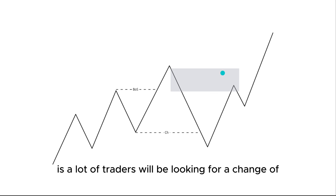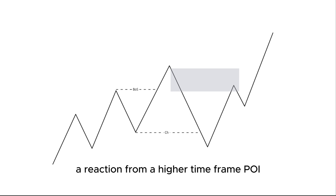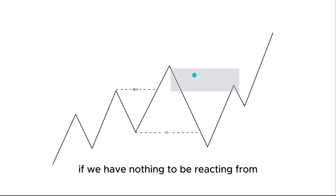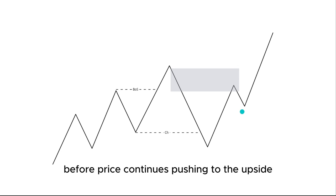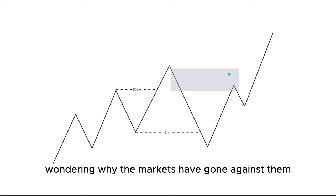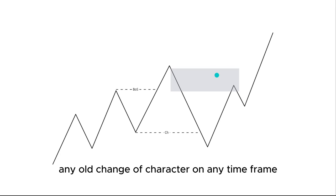The anticipation from smart money concept traders is to trade the reaction of an order block that caused this change of character. The common problem is that a lot of traders will look for a change of character anywhere in the markets. If we're looking for a change of character, we need a couple of things: we want to see a reaction from a higher time frame POI — we need this high to be reacting to a higher time frame POI somewhere to the left. Without a valid reason for price to react, it's simply going to be a liquidity grab, pushing price up and grabbing liquidity from early impulsive sellers before continuing higher.